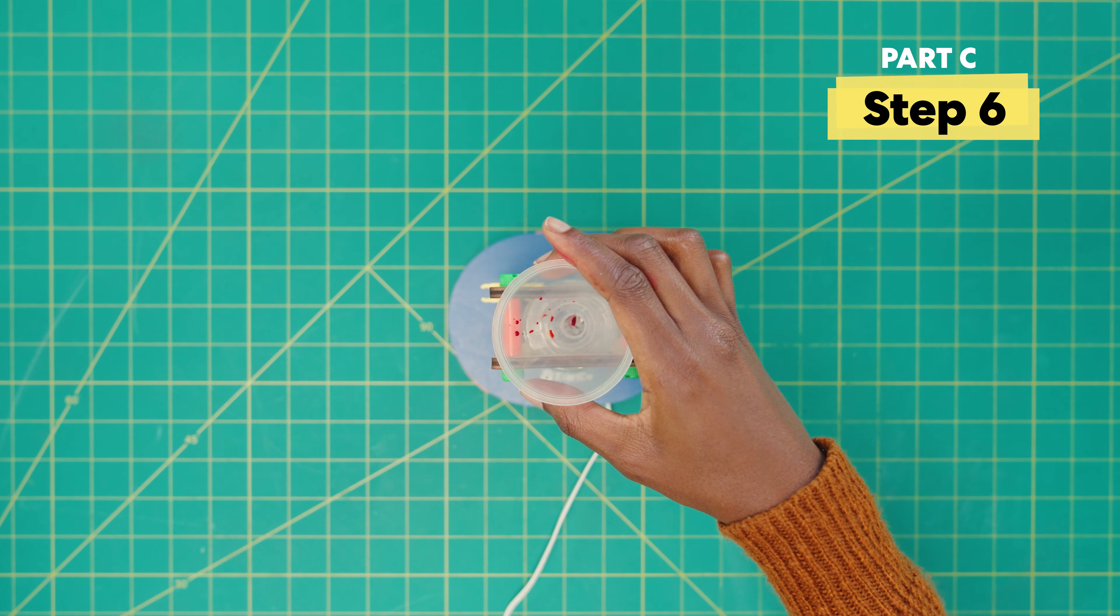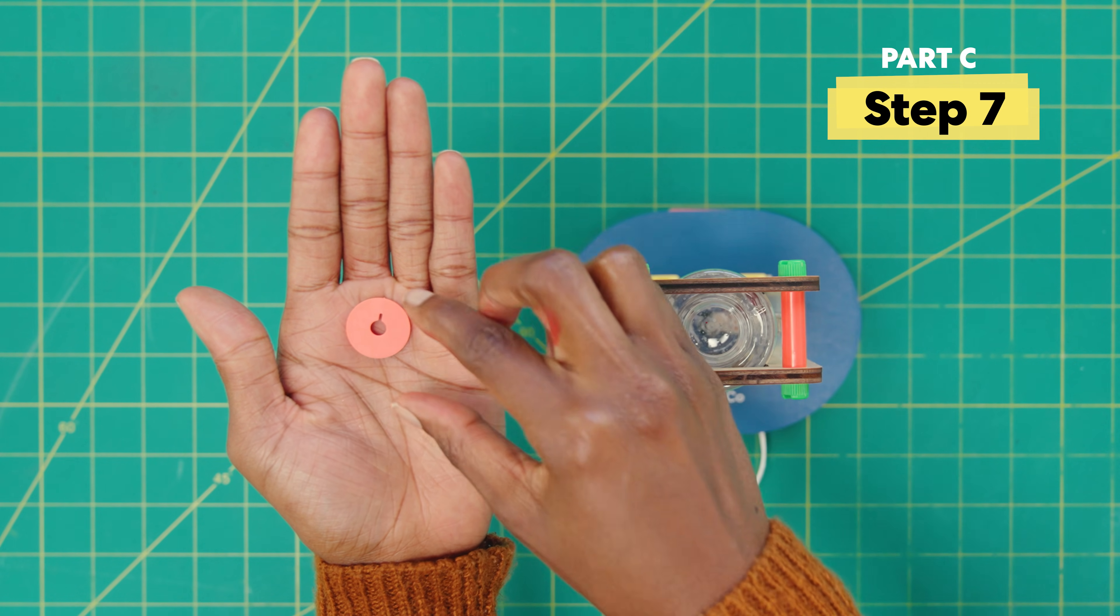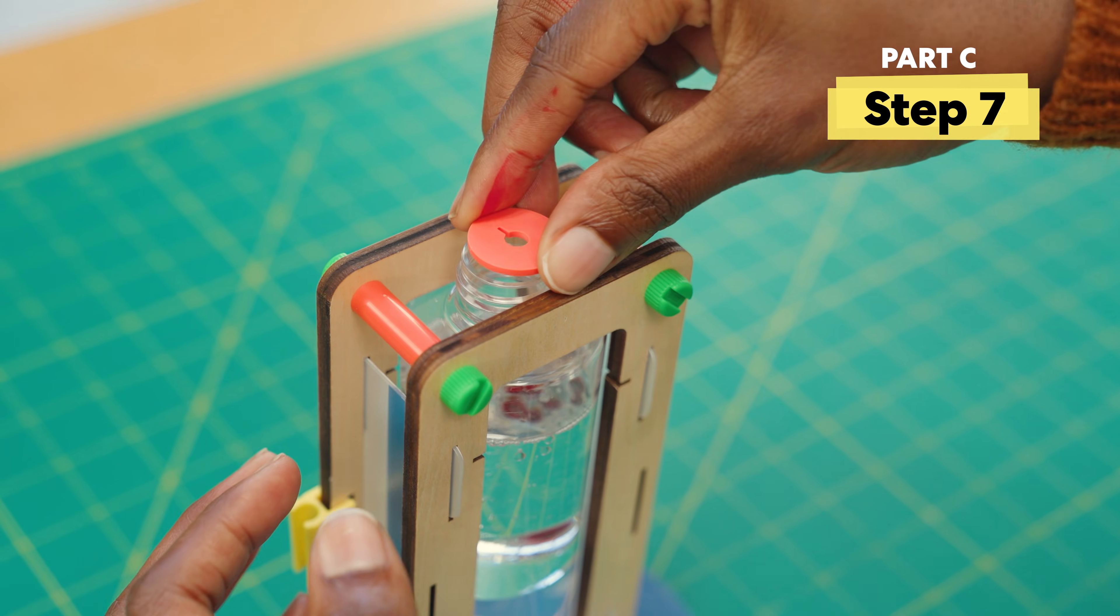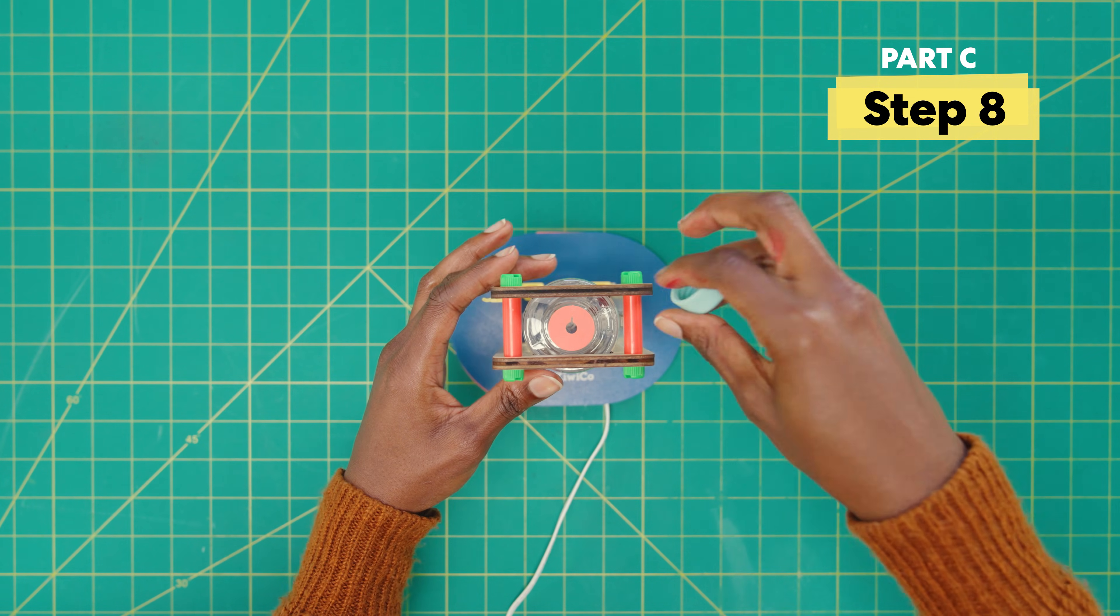And now, remove the funnel from the bottle. Next, attach the gasket to the bottle. And then add the cap to the top.